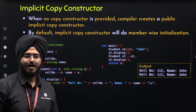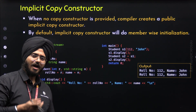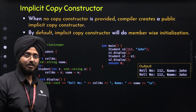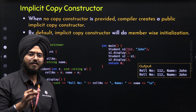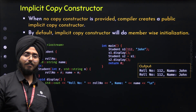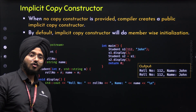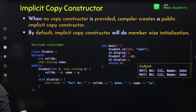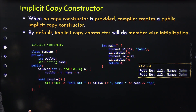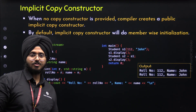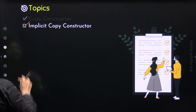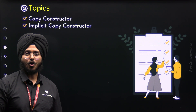Now you might be thinking: if we have the concept of implicit copy constructor, then why do we need to create our own copy constructor to do the same job? This is something we will understand later when we study the concept of shallow copy and deep copy — we have a dedicated lecture for that. There you will get to know when we need to create our own copy constructor. For now, just understand that the implicit copy constructor is what we need most of the time. Sometimes we do not have to create our own copy constructor, but sometimes we may need to. With this, we have understood all the topics of this lecture.